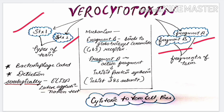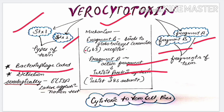Fragment B binds to the globotriosylceramide receptor (GB3 receptor). It then sends fragment A into the cell. Fragment A is the active fragment and inhibits protein synthesis, which ultimately leads to the death of epithelial cells. Verocytotoxins are bacteriophage-coded, not plasmid-coded, and detection is made serologically.